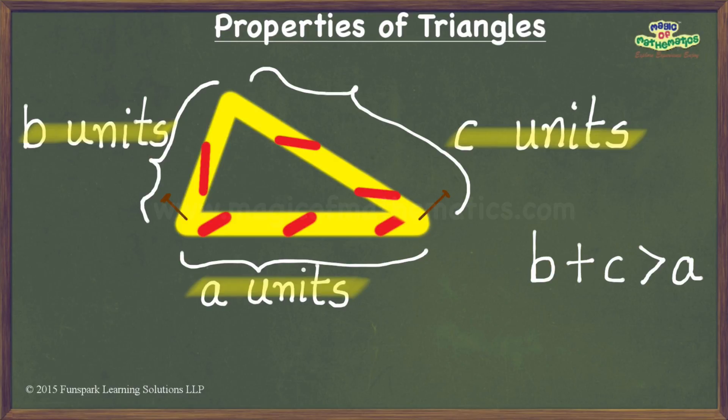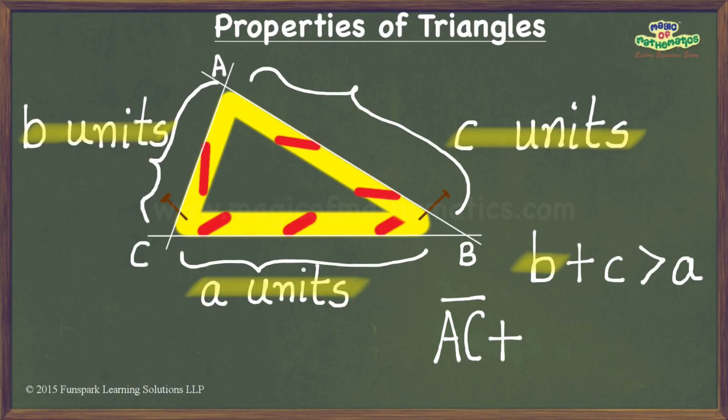If I draw lines along our two strips as shown, I will get a triangle which I have marked as ABC. And in this triangle, we can see that the length of the side AC which is B units plus the length of the side AB which is C units is greater than the length of the side BC which is A units.